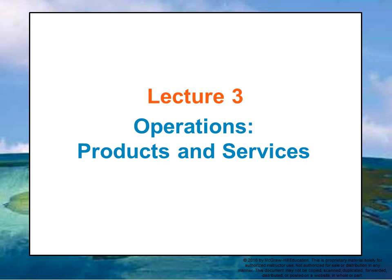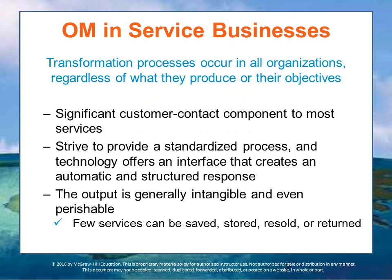Let's start talking about products and services and operations in those contexts, beginning with service providers and the difference in operations management in the services context. Transformation processes occur in all organizations regardless of what they produce and what their objectives are. For most organizations, the ultimate objective is to produce outputs that are worth something — worth more than the combined cost of all the inputs.